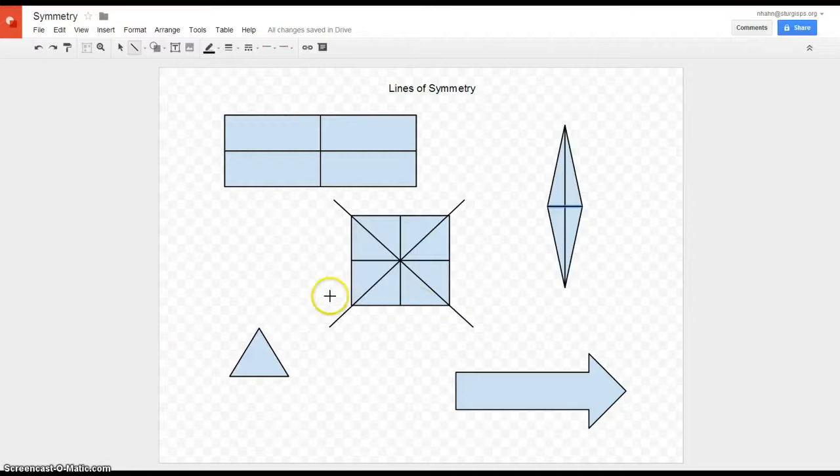And then finally I have a triangle here, equilateral triangle. I'm going to draw a line of symmetry which would end up right here. And equilateral triangles actually have three.